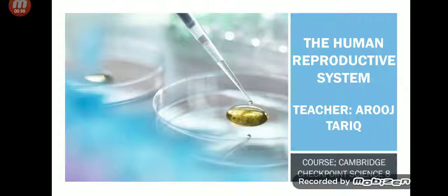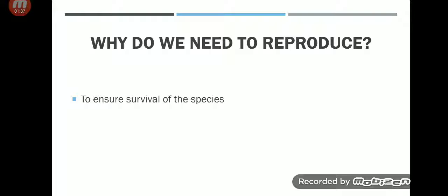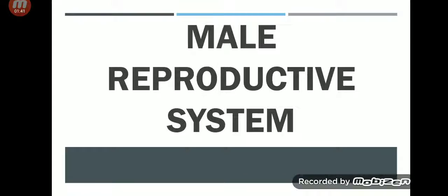Our course today is Cambridge Checkpoint Science. The very first question is: why do we need to reproduce? The answer is to ensure the survival of species. If we will not reproduce, there will be no humans on earth remaining. All humans will be extinct. So to ensure the survival of the human species, we have to reproduce.